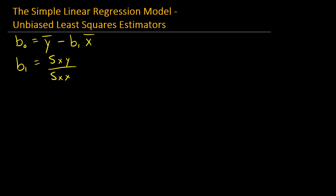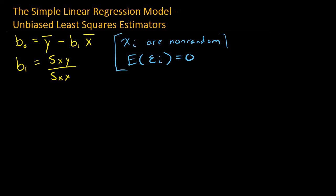To show that these are unbiased estimators, we did previously talk about assumptions for this model, but it's really important to know which assumptions you're using and when you're using them. We are going to need the assumptions that xi are non-random, and that the expected value of epsilon sub i equals 0. These are the two model assumptions we will be using.